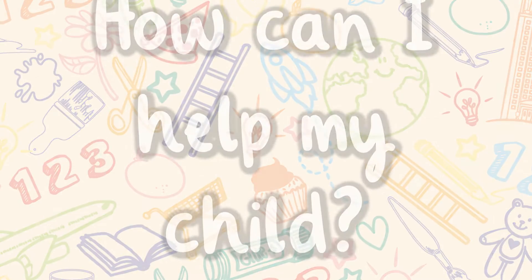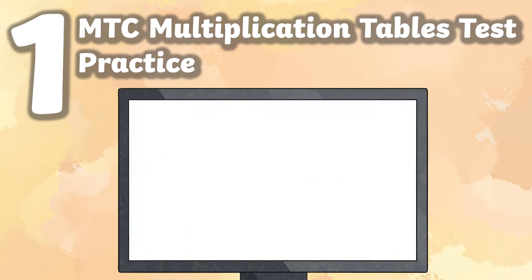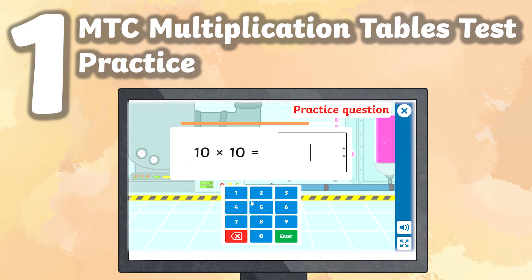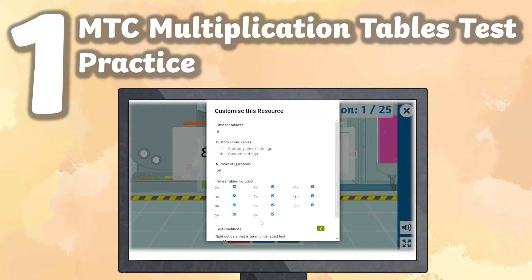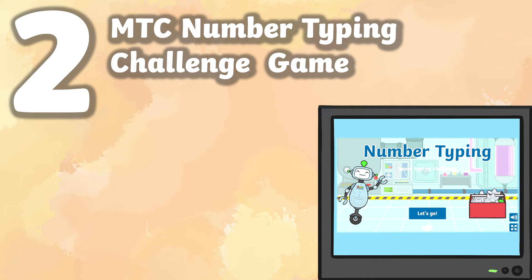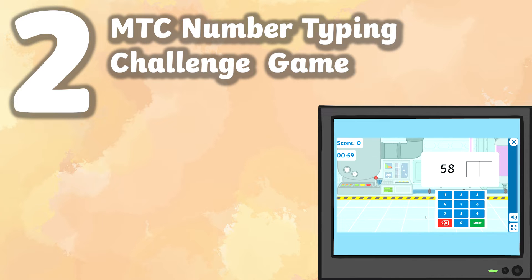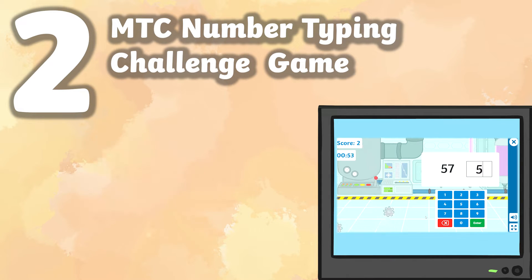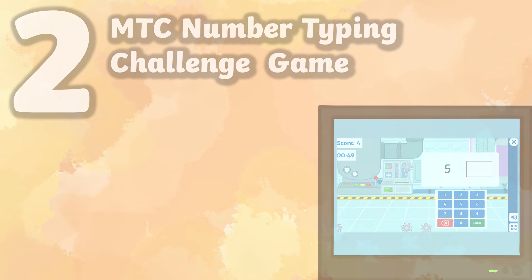But how can I help my child? Here are Twinkl's top 5 resources to support your child when taking the MTC. The Twinkl Go Multiplication Tables Check quiz and practice is adjustable to meet the needs of your learners, from the times tables being tested to the amount of time given per question. The Twinkl Go Number Typing Challenge is a brilliant resource for children who might already be equipped with the math skills needed for the check, but struggle typing and finding the numbers within the 6-second limit.